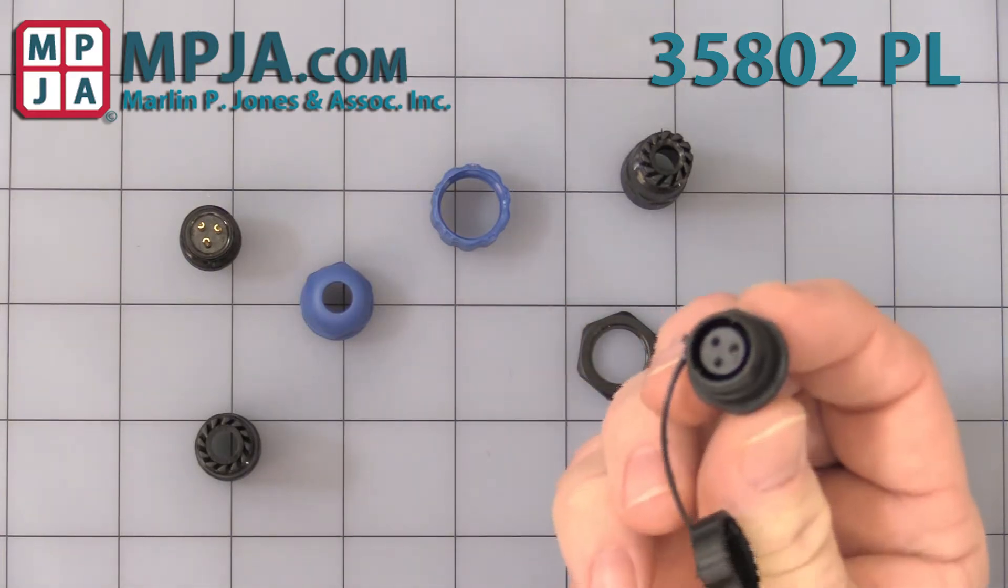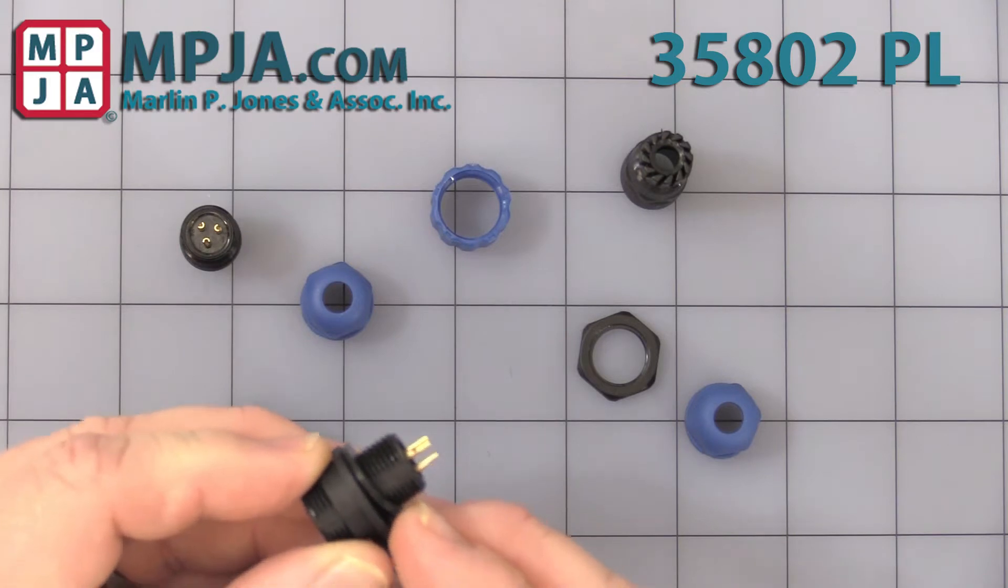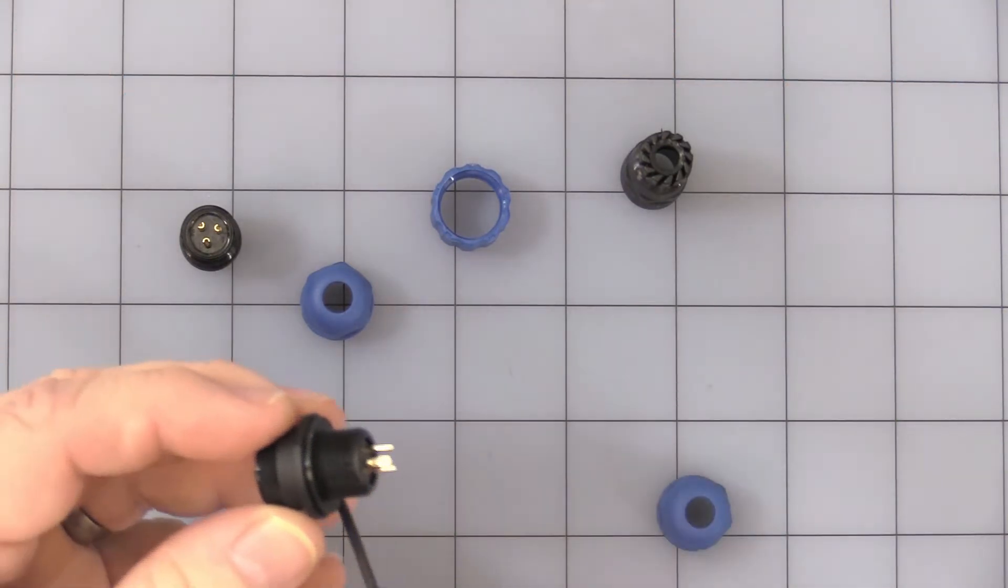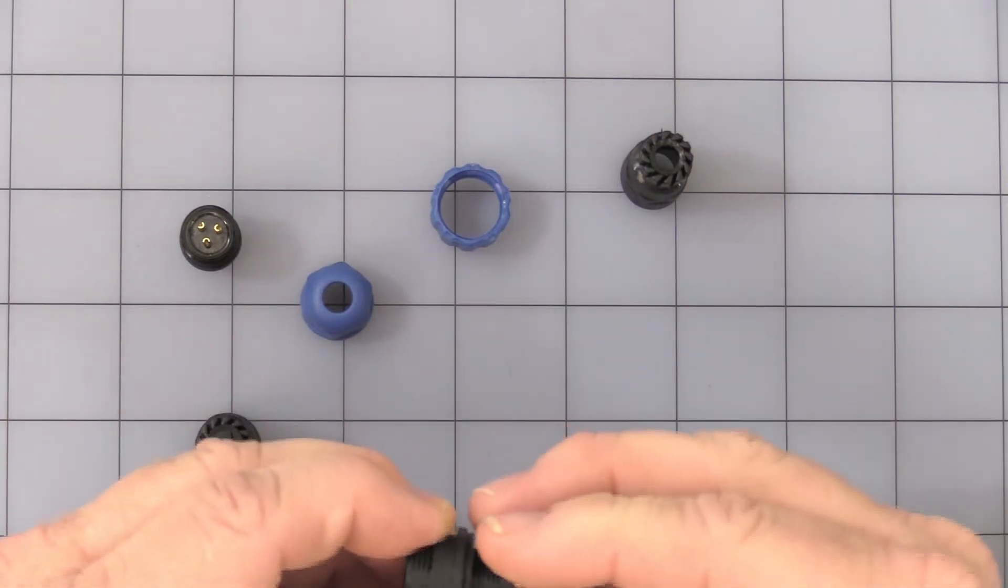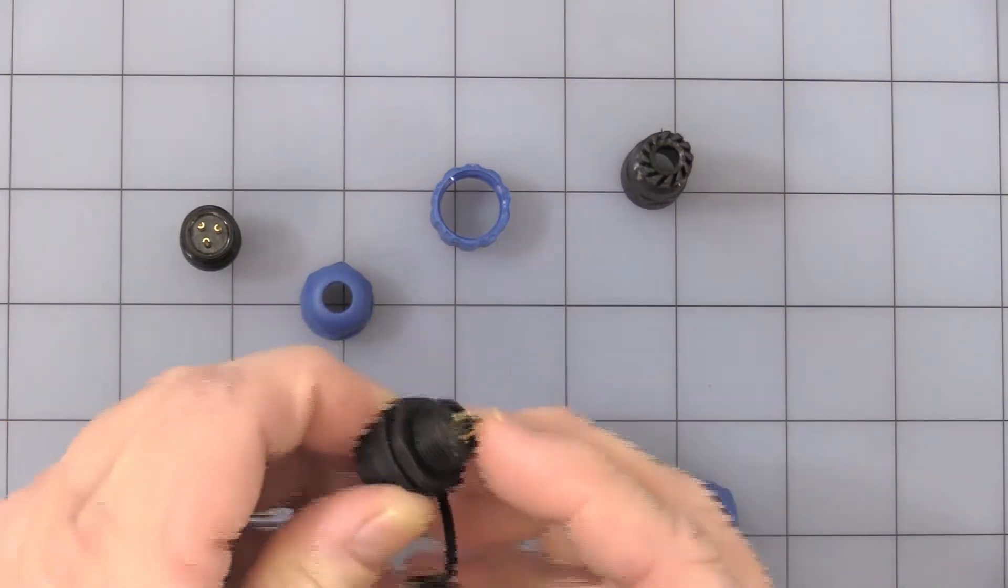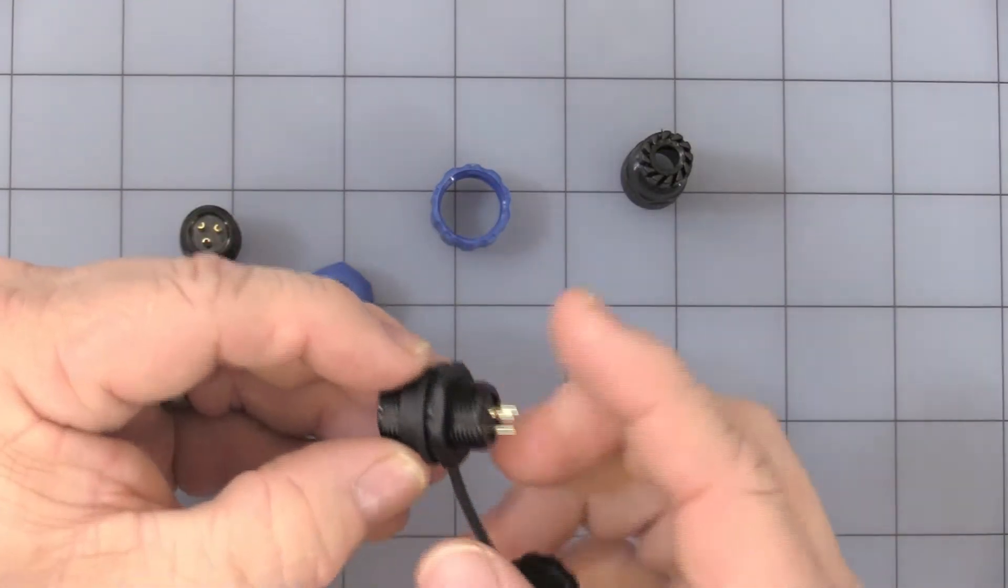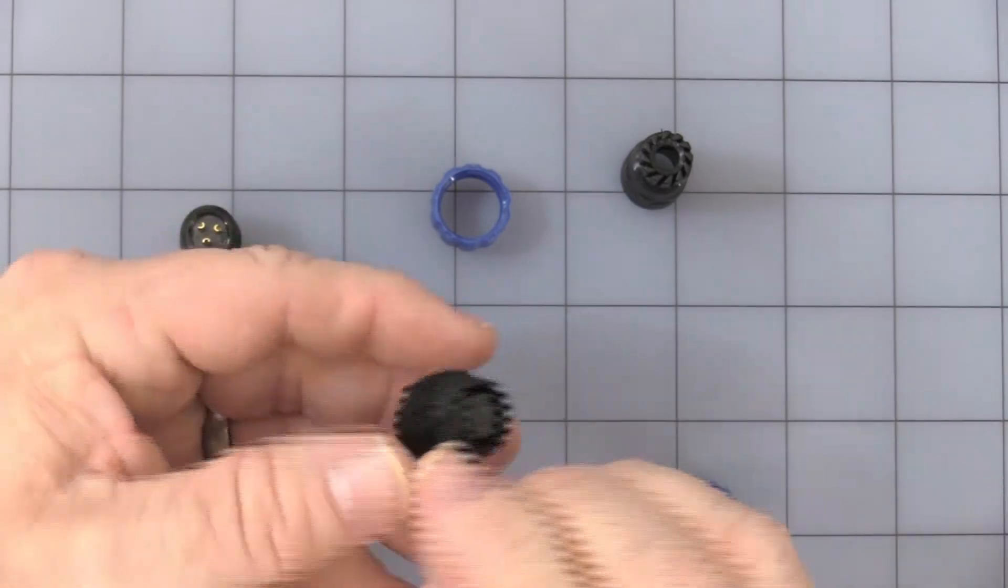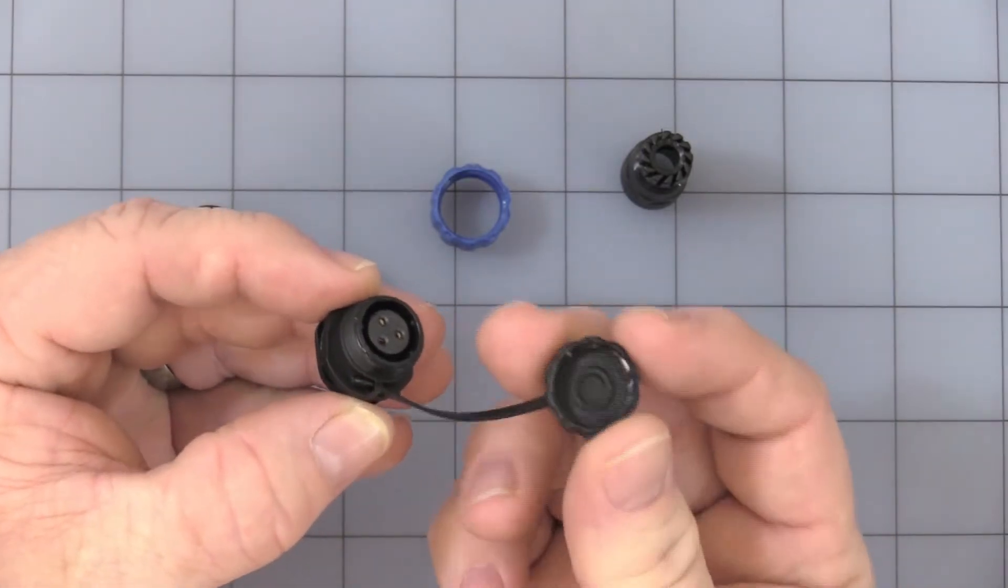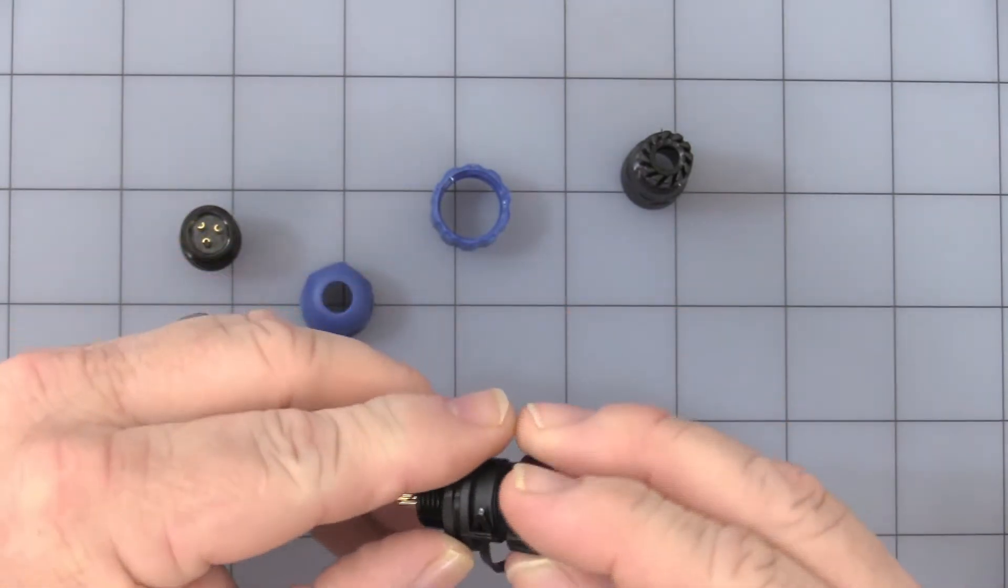You have the female chassis. You can use it as a chassis. It does have a little neoprene ring to help waterproof. Then you have the plastic nut to mount it to a chassis. There's the solder cups, nice little solder cups. When it's used as the chassis, you do have this sealing cap with a little o-ring in there that will help waterproof it.